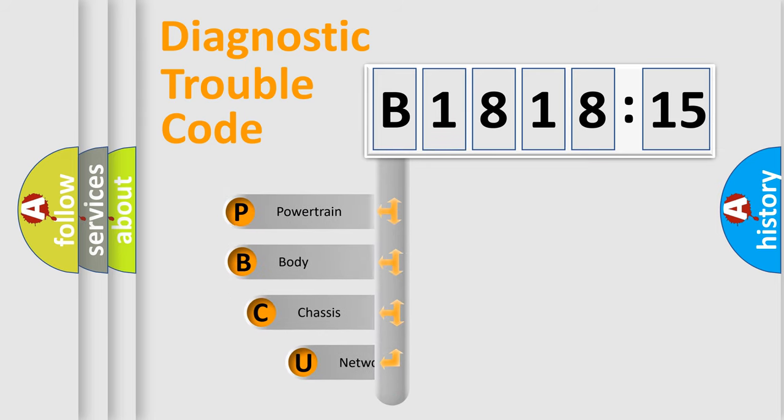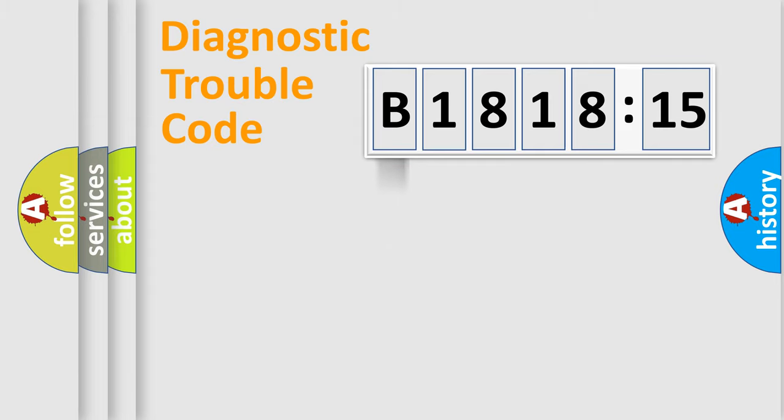First, let's look at the history of diagnostic fault code composition according to the OBD2 protocol, which is unified for all automakers since 2000. We divide the electric system of automobile into four basic units: Powertrain, Body, Chassis, and Network.